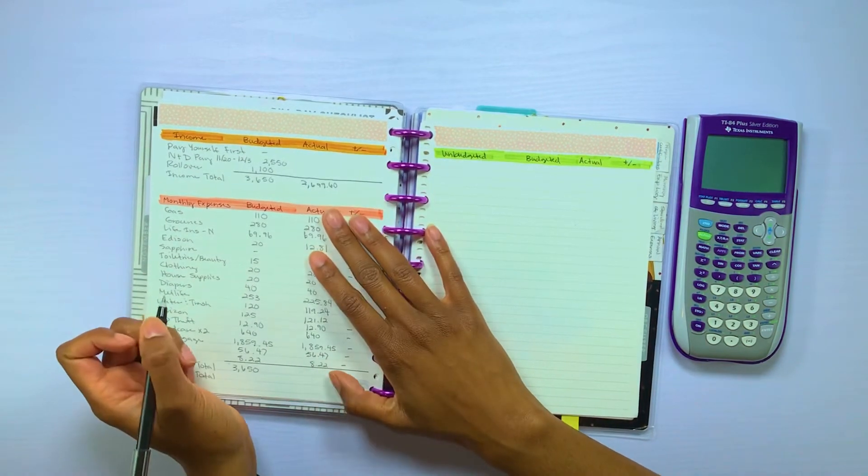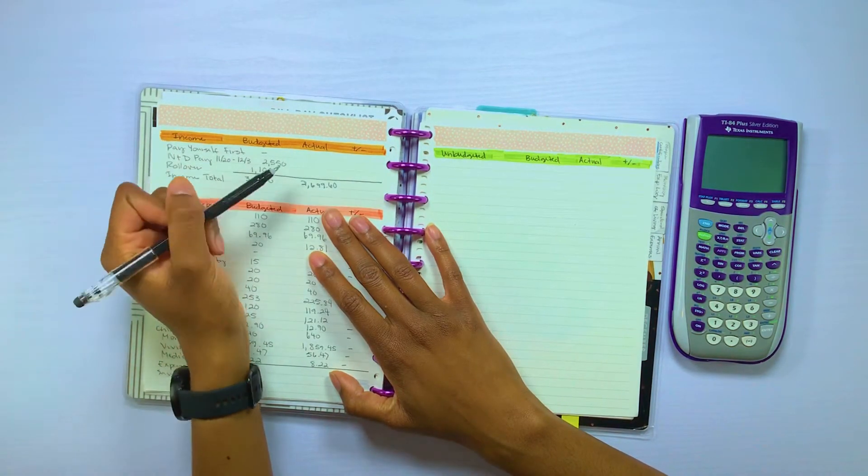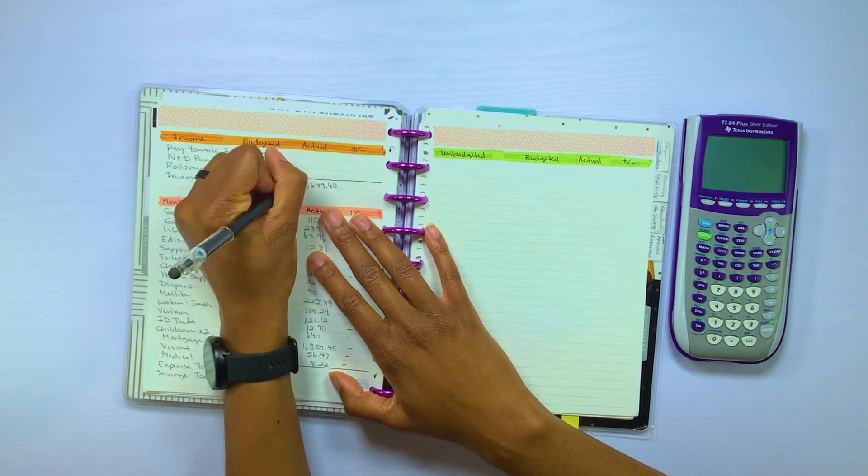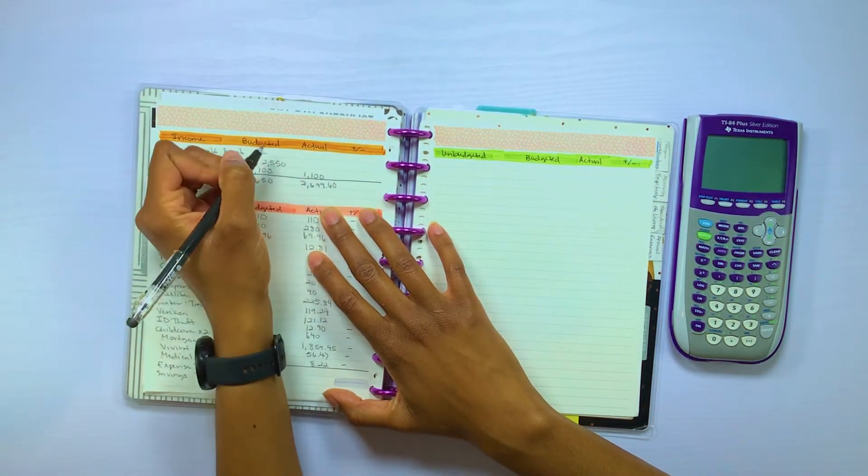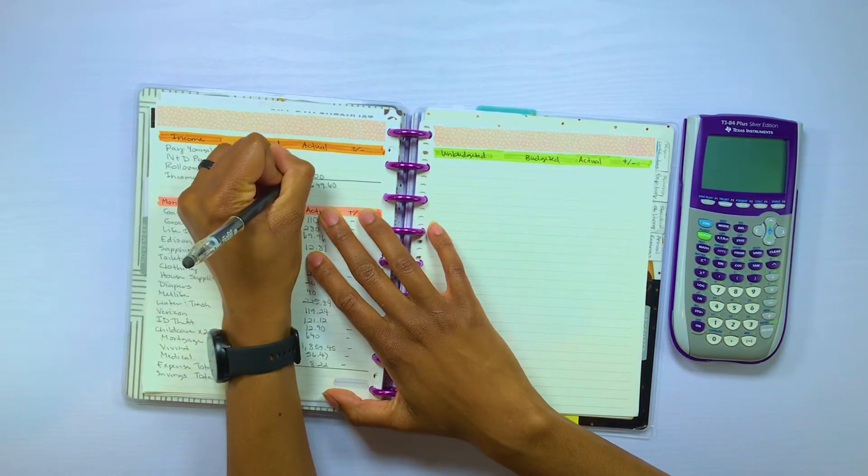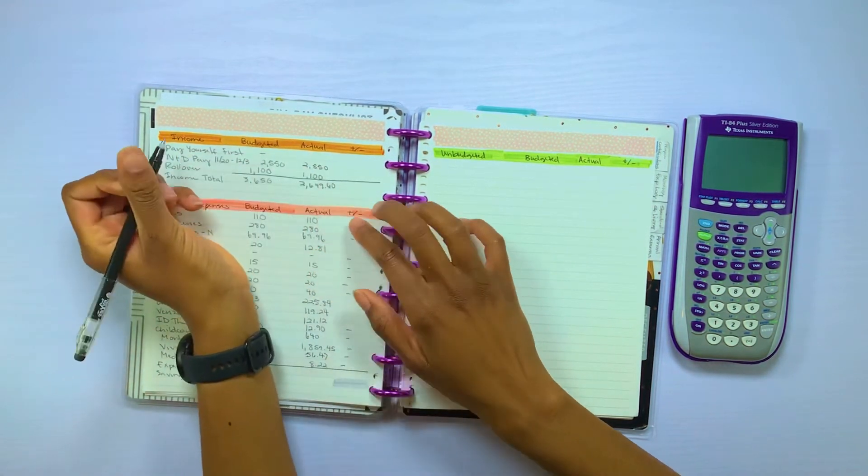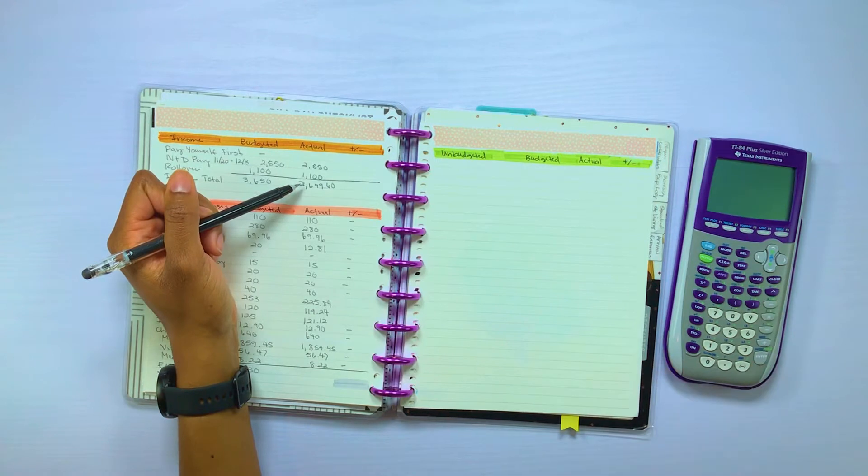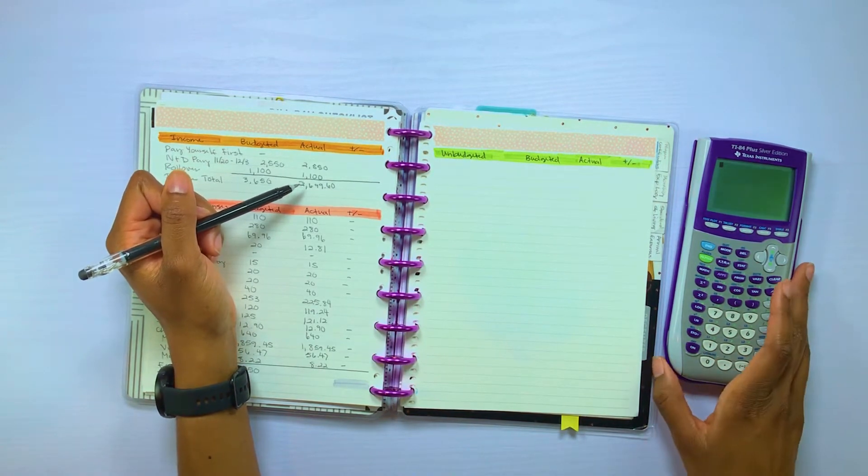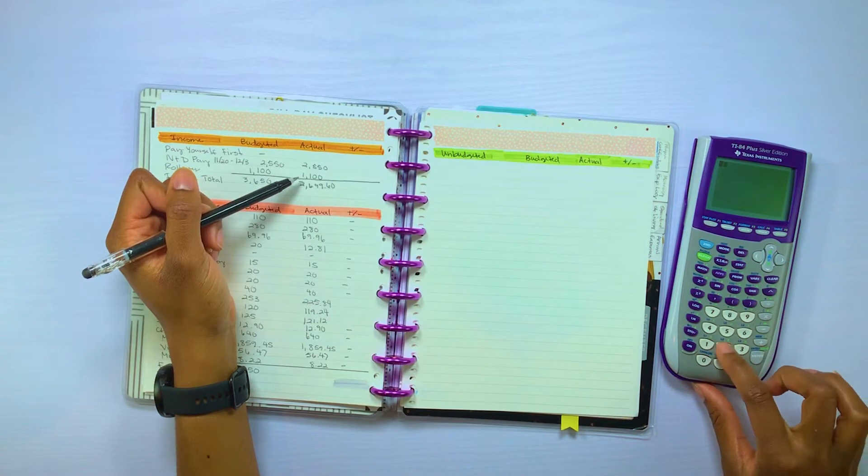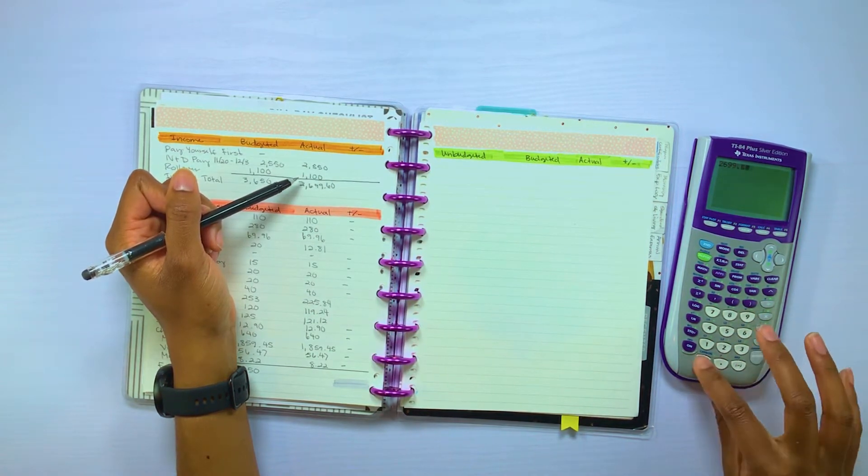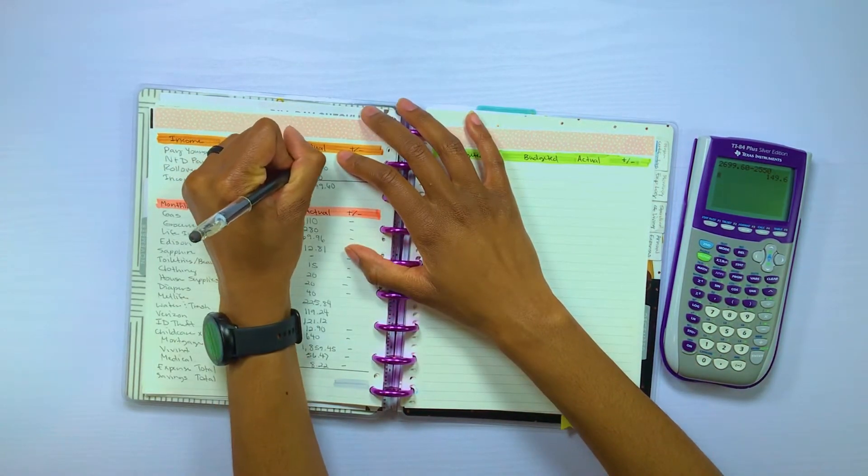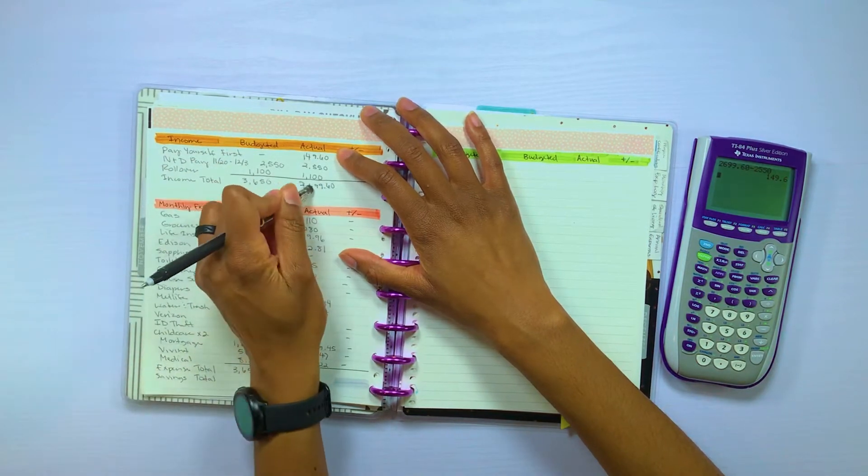For this paycheck we did receive $2,699.16 and we did roll over $1,100. And then we are still budgeting $2,550 for this amount. So what I need to do for this pay yourself first line, I usually don't write this amount in just yet, but I need to remember what the number was. So $149.60 is what we are paying ourselves first.